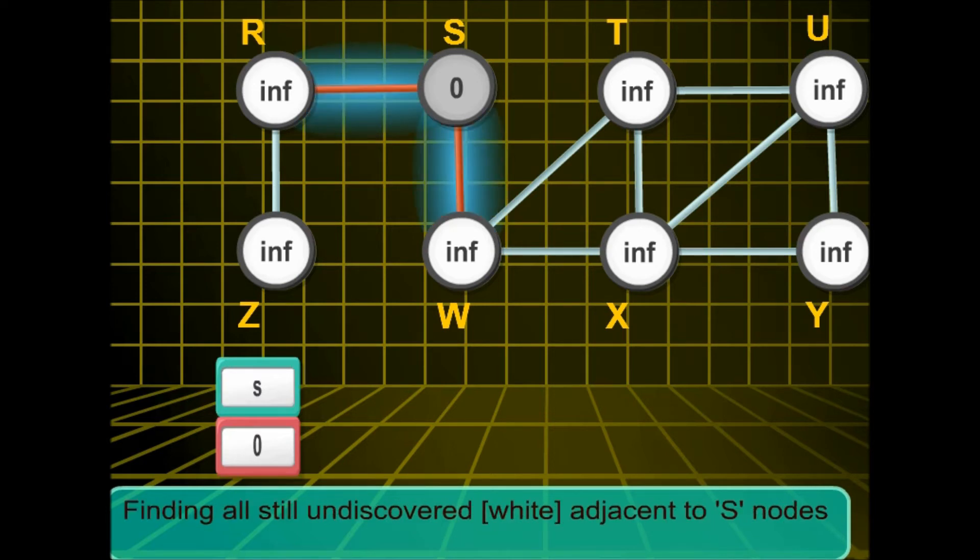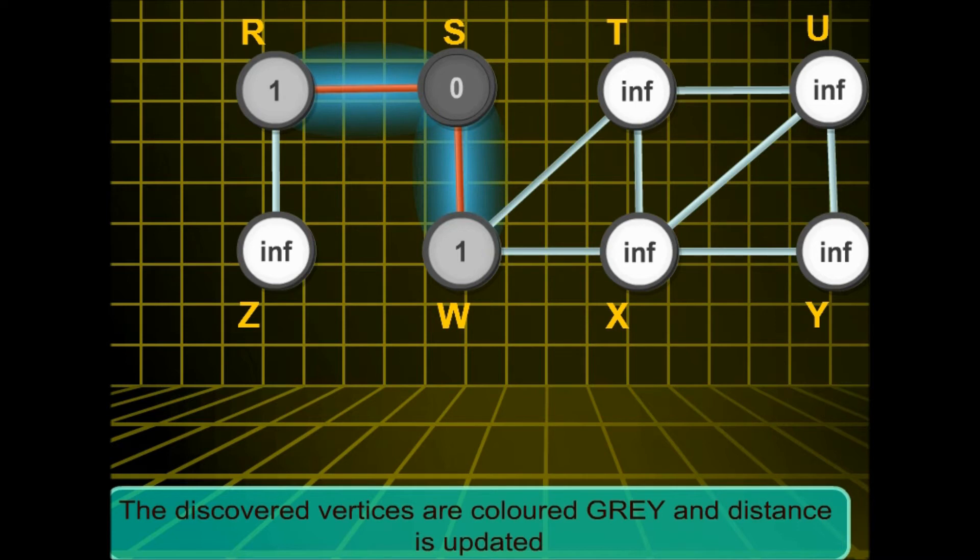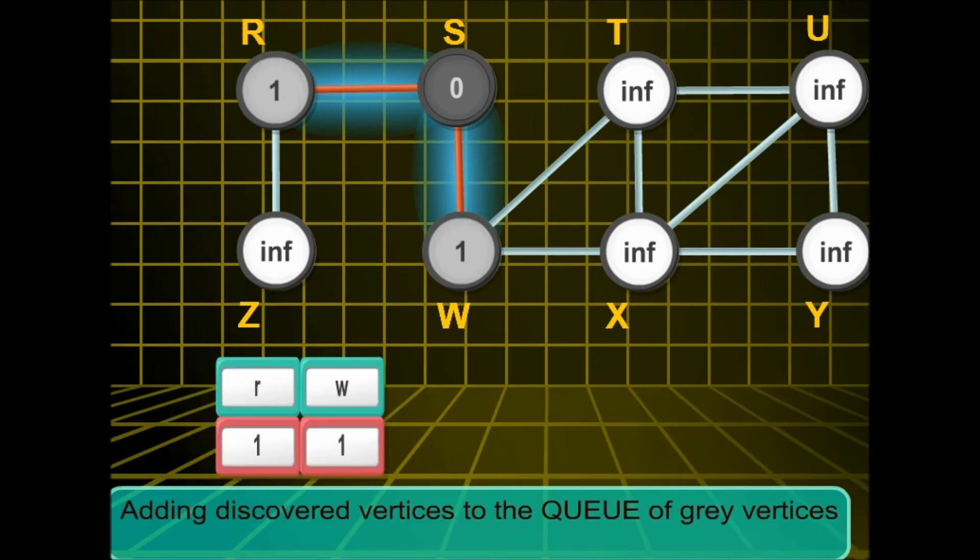After this we discover the neighbours of this node. It is marked black and dequeued. The discovered vertices are colored grey and the distance is updated. Since r and w are at a unit distance, we update the distance as 1. Notice that both of them have been enqueued now.